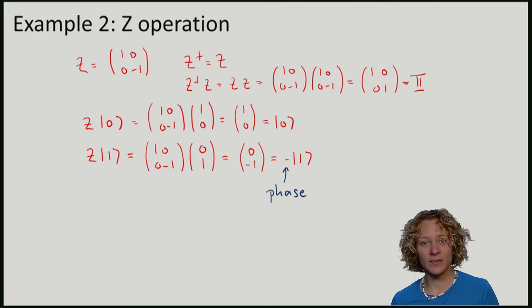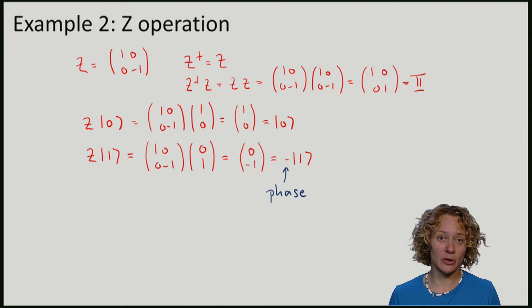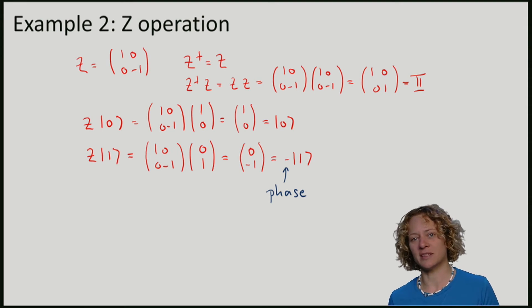X and Z are bit flip and phase flip operations, which means that we add a minus to the 1 state for the phase flip. We will also call these the Pauli X and Pauli Z matrices.